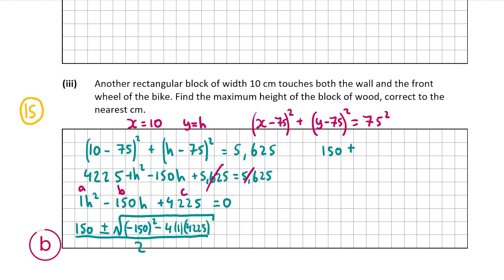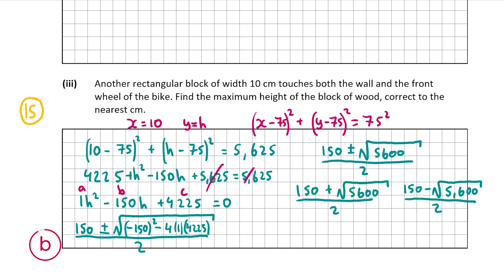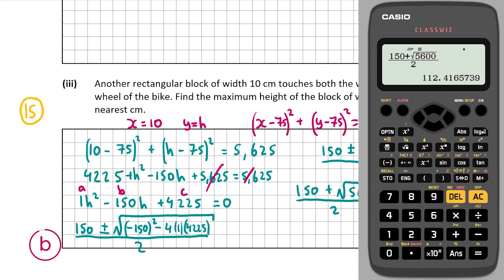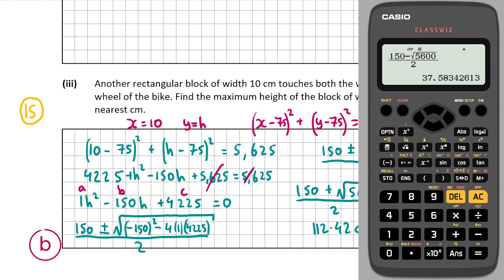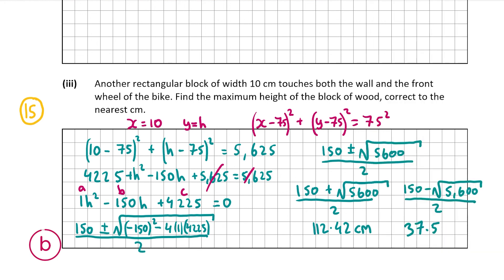That simplifies to 150 plus or minus the square root of 5600, all over 2. Taking the positive case gives 112.42 centimeters, and the negative case gives 37.56 centimeters. However, 112.42 is not valid as it exceeds the radius of 75 centimeters, which wouldn't make sense. Therefore the maximum height is 37.56 centimeters, and correct to the nearest centimeter that's 38 centimeters.